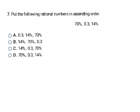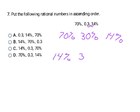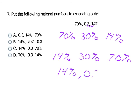This problem asks me to put numbers in ascending order, so I need them all in the same form. Two of them are already percents, so I'll convert the middle decimal to a percent by moving the decimal two places to the right, filling in a zero — that gives 30%. Now I have 70%, 30%, and 14%. In ascending order: 14%, 30%, 70%. Since 30% was originally 0.3, I write it as 0.3. The answer is 14%, 0.3, and 70% — choice C.